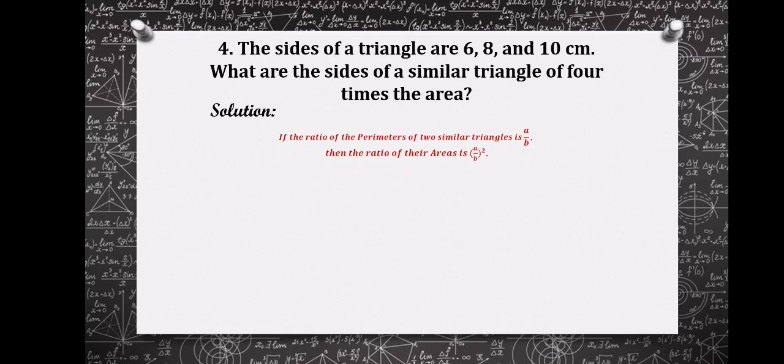If the ratio of the perimeters of two similar triangles is A over B, then the ratio of their area is the square of the quantity A over B.